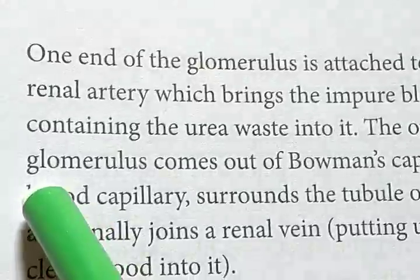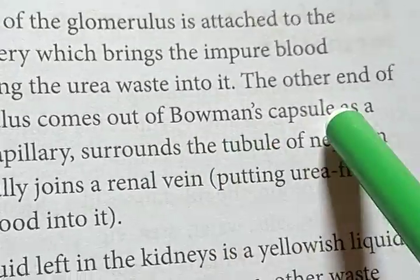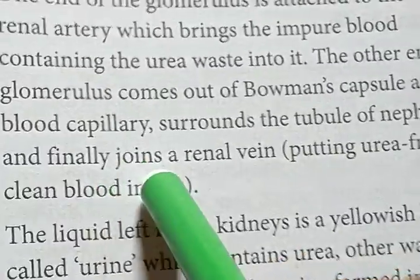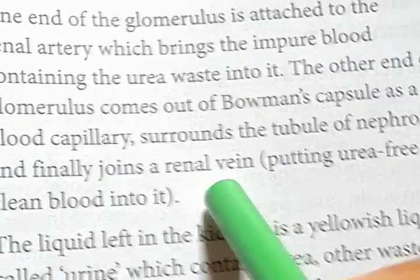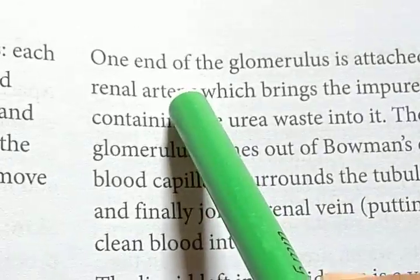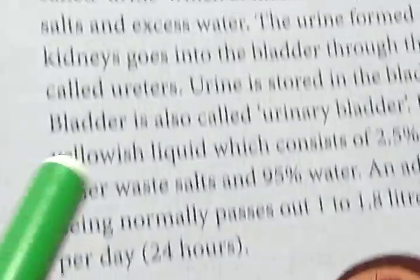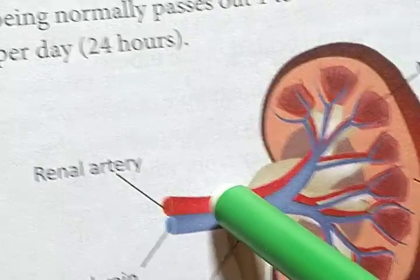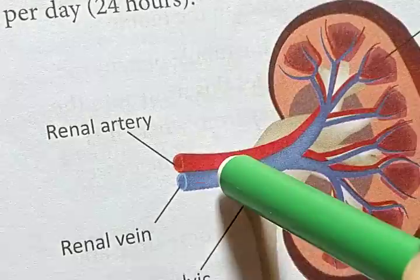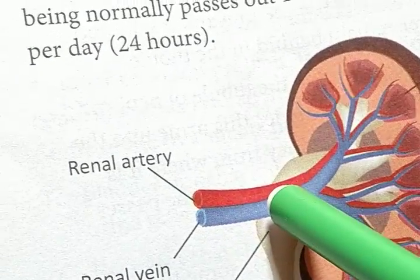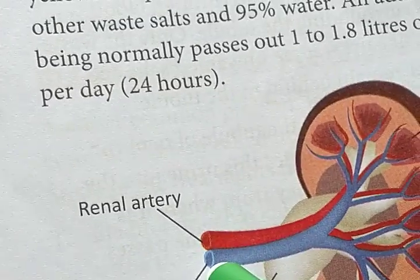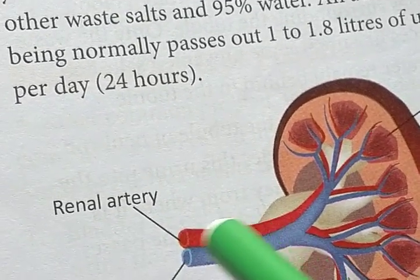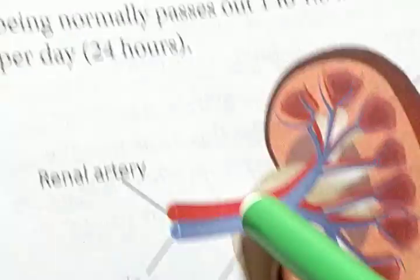The other end of the glomerulus comes out of the Bowman's capsule as blood capillaries surrounded by the tubule, and finally joins the renal vein. So one end of the glomerulus is attached to the renal artery bringing in impure blood, and the other end is attached to the renal vein where the filtered blood — with unwanted substances removed — is released.